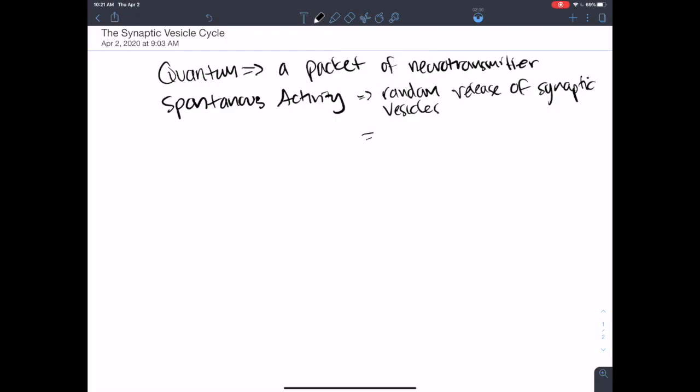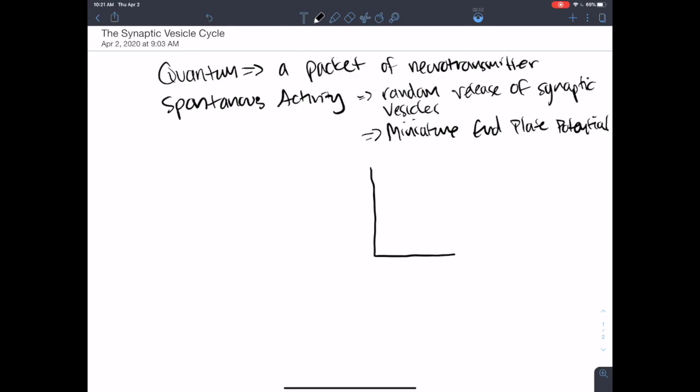And this is what's going to create in our neuromuscular junction, that miniature end plate potential. What I mean by that is during this spontaneous release, right, when the neuron is supposed to be inactive and every once in a while, a packet of neurotransmitter just happens to be released from the presynaptic. If I'm measuring from the postsynaptic,